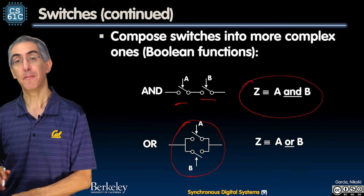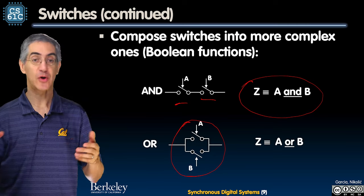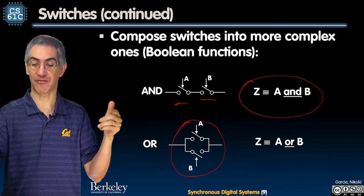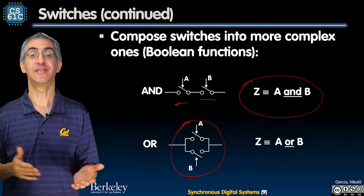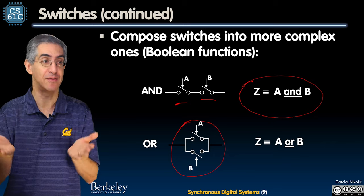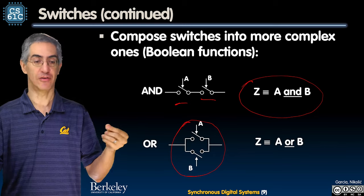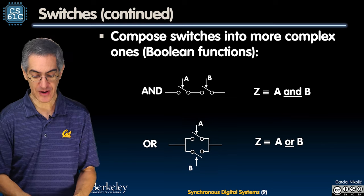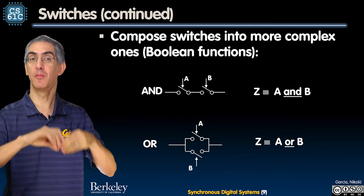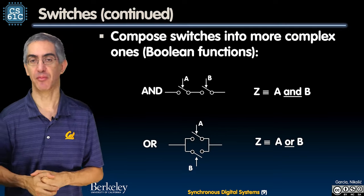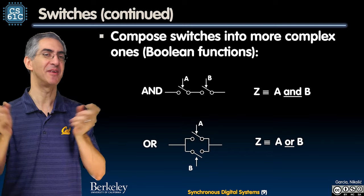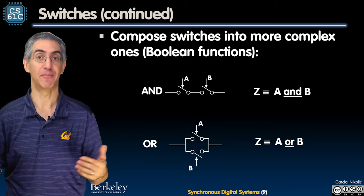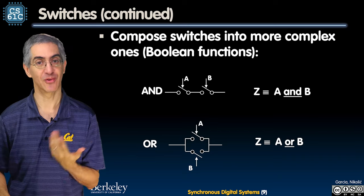And this is wiring them in parallel. Current doesn't care whether it goes through A or through B or through both — it just needs to get from one side to the other. So wiring switches in parallel gives me the OR gate, the one-bit Boolean OR gate. There's a path if A or B are closed. We're already seeing a connection between our basic switches — which you could wire at home with aluminum foil, a battery, and a light bulb — and Boolean logic.